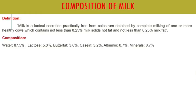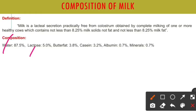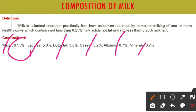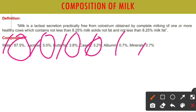If we see the composition of milk, it mainly contains water, lactose, butter fat, casein, albumin, and minerals. The concentrations are: water around 87.5%, lactose around 5%, butter fat 3.8%, casein around 3.2%, albumin around 0.7%, and minerals also 0.7%. This composition is very important as far as the health of milk is concerned.